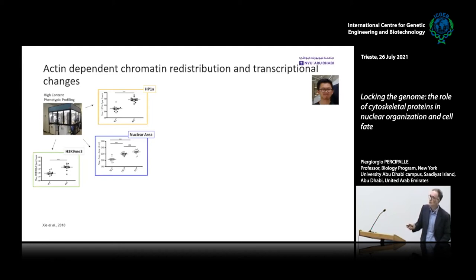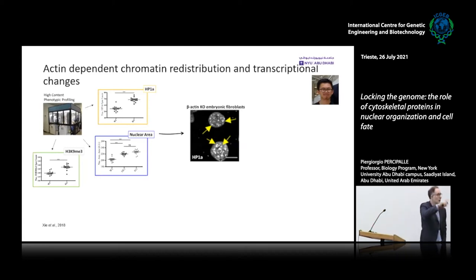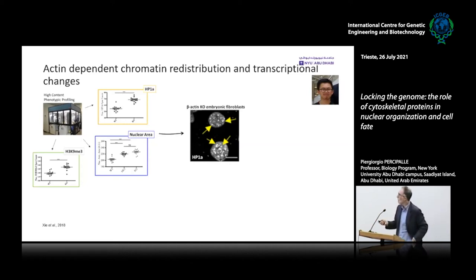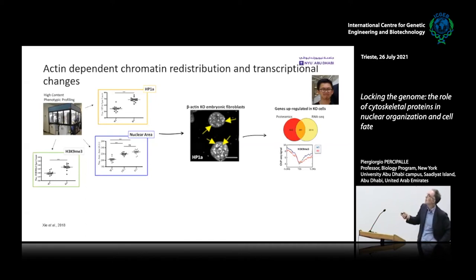There is also a major change in nuclear area. Confocal microscopy on these cells shows that HP1-alpha is lost from the nuclear lamina — HP1-alpha being a marker for heterochromatin. We interpret this as a loss of heterochromatin segregation at the nuclear lamina and an abnormal accumulation of HP1-alpha inside the nucleus. RNA-seq profiling reveals a lot of differential gene expression, and the analysis is compatible with proteomics.